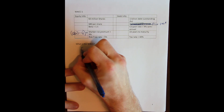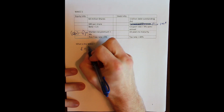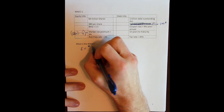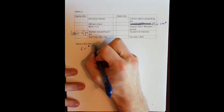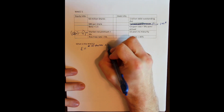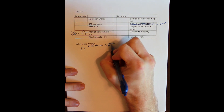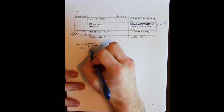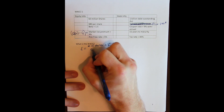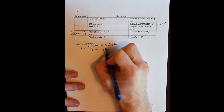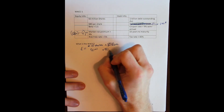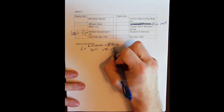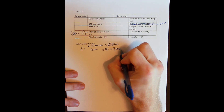We'll start with the market values. The market value of any security is the number of shares times the price per share, or the number of financial instruments times the price per instrument. For equity, that's 50 million shares times $80 per share, which gives us a market value of equity of $4 billion.